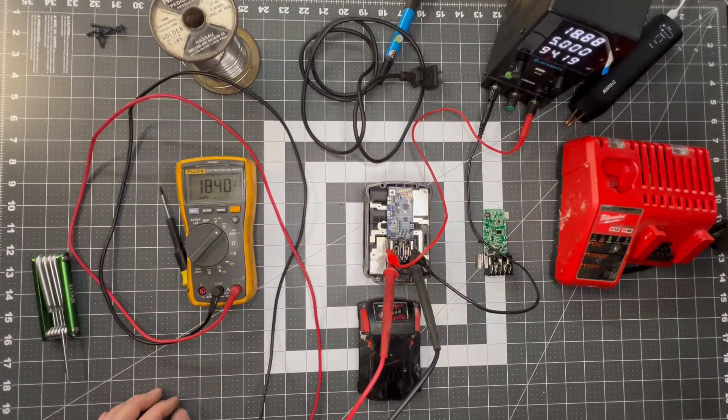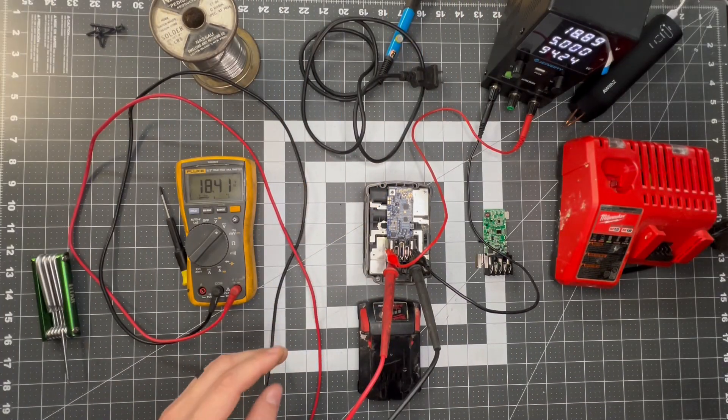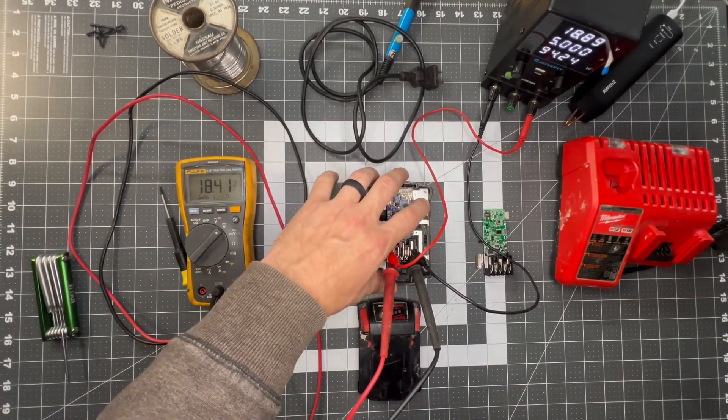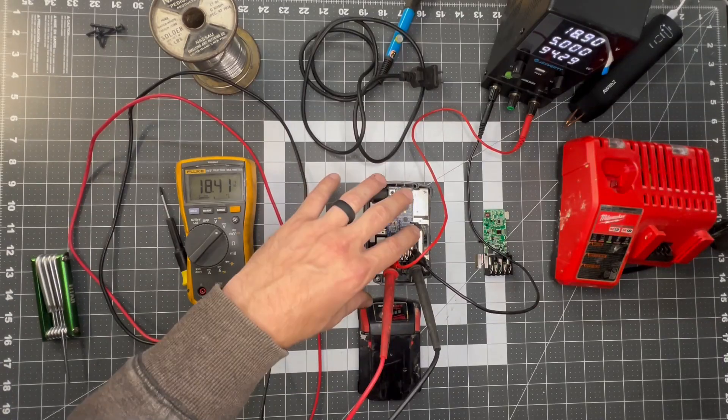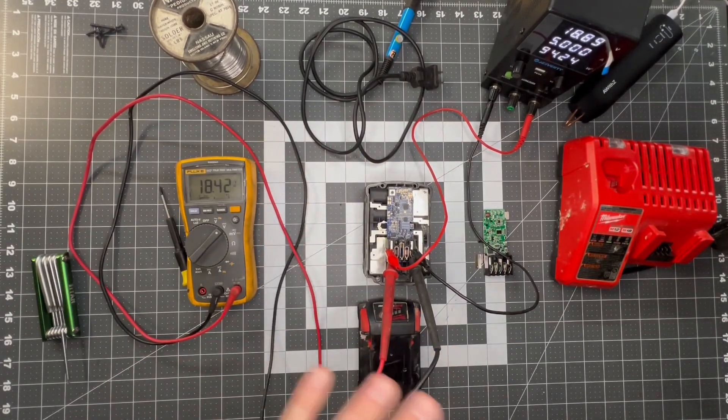So a couple months back, I did this. Afterwards, I cleaned the drill out with compressed air, cleaned the battery pack out with compressed air, sprayed everything down with some electronics cleaner, cleaned everything off, and everything seemed to work fine.